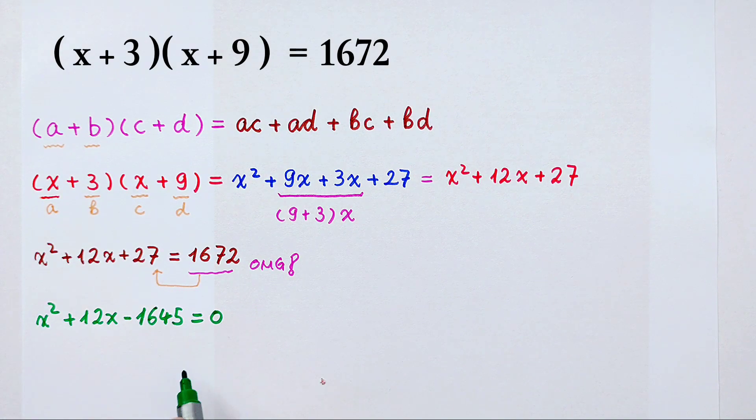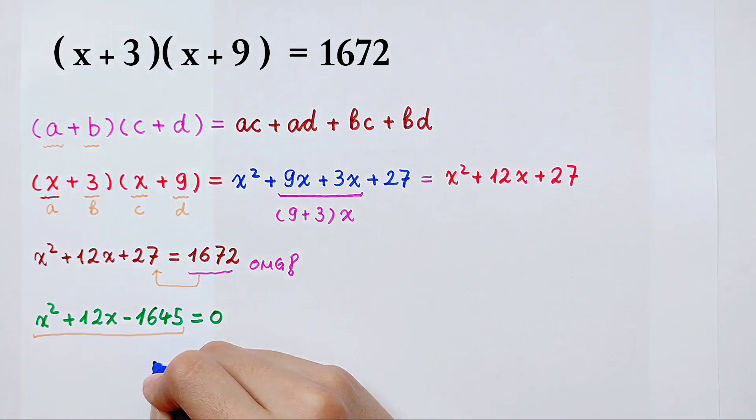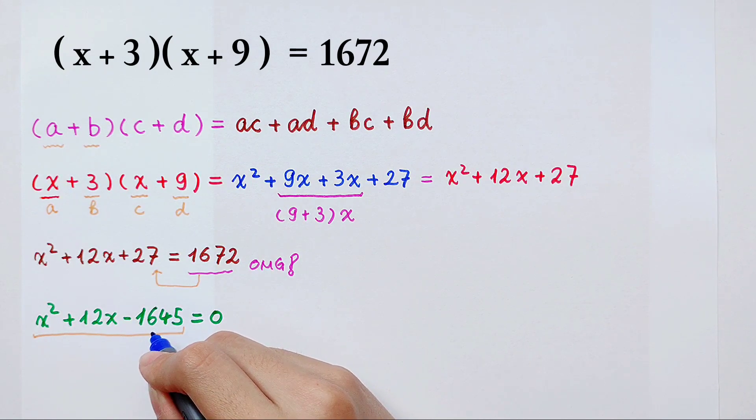So the left side, it becomes a term of x. Think about it. Can you find the factorization of this term? Then we have to figure out two numbers which the multiplication of them is negative 1645, and the sum of them is 12.